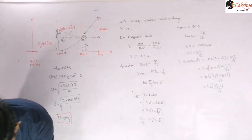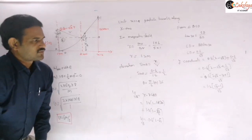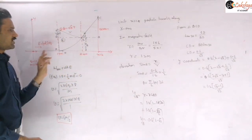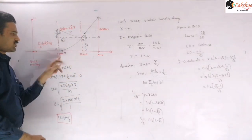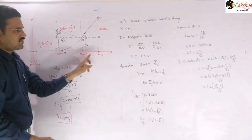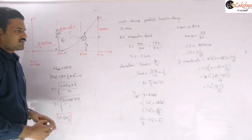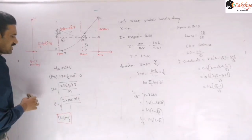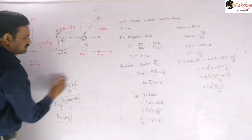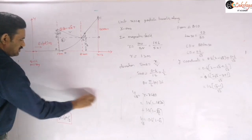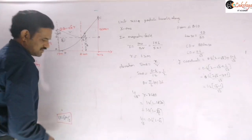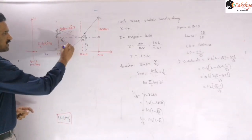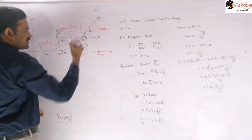Now we calculate the time taken, by splitting it into three parts: t₁ for travel from x = 0 to x = 1.8 m (electric field region), t₂ for travel from x = 1.8 to x = 2.4 m (magnetic field region), and t₃ for travel from x = 2.4 to x = 3 m (field-free region).